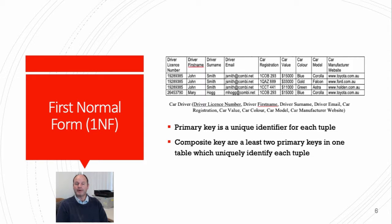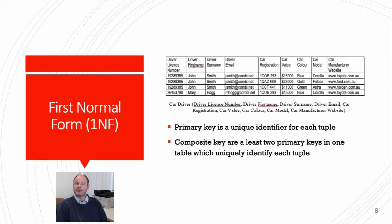A primary key can be made up of more than one attribute, and this is called a composite key. Now that we have a relation, we can start to normalize to get rid of various anomalies — these being data repetition and redundancy, insert, update and delete anomalies, and poor storage use.